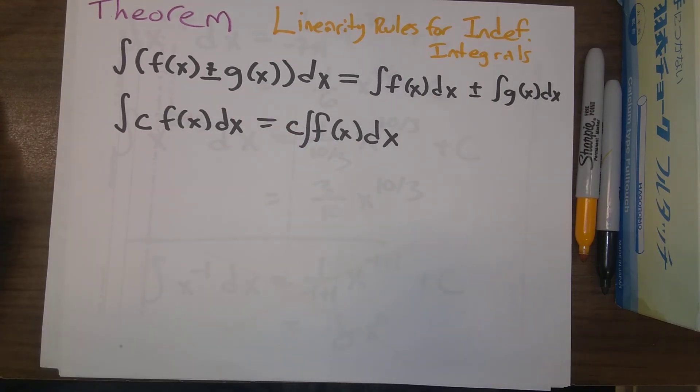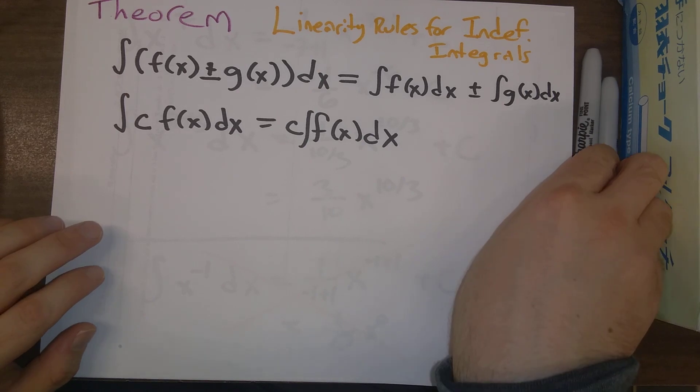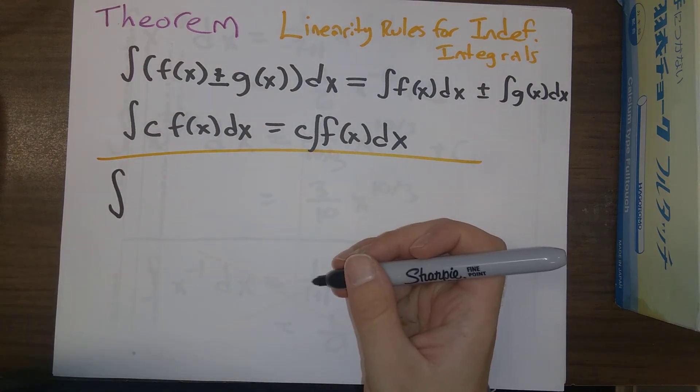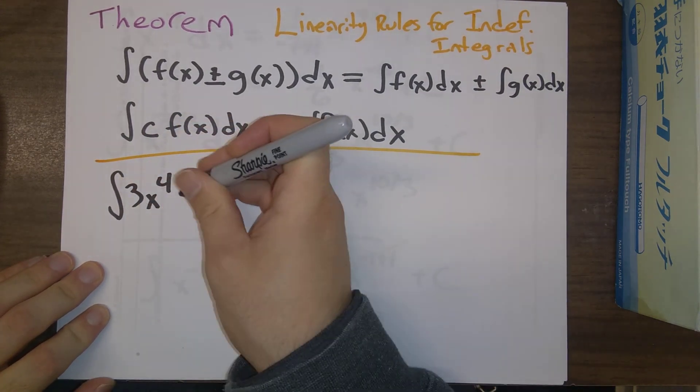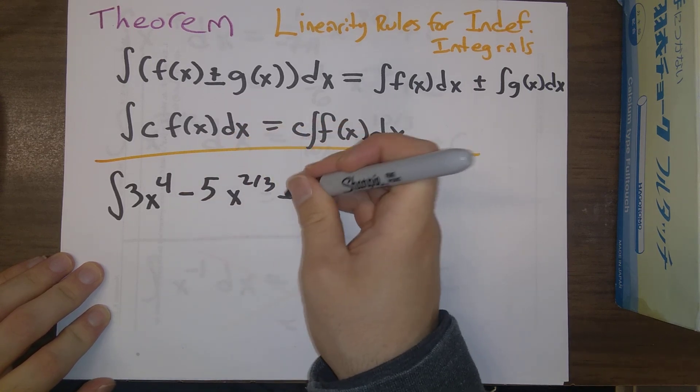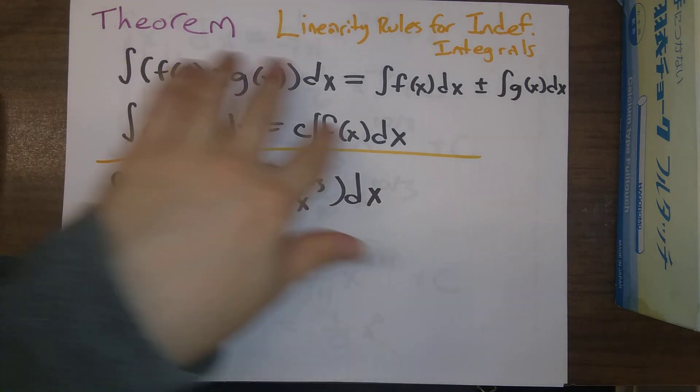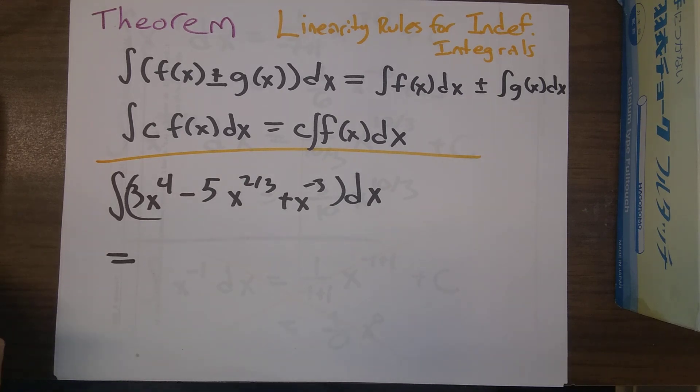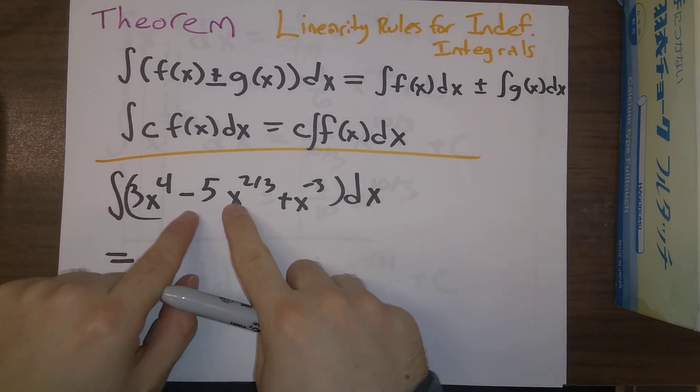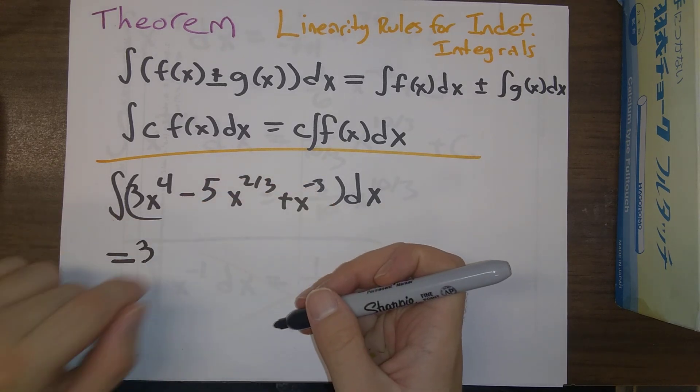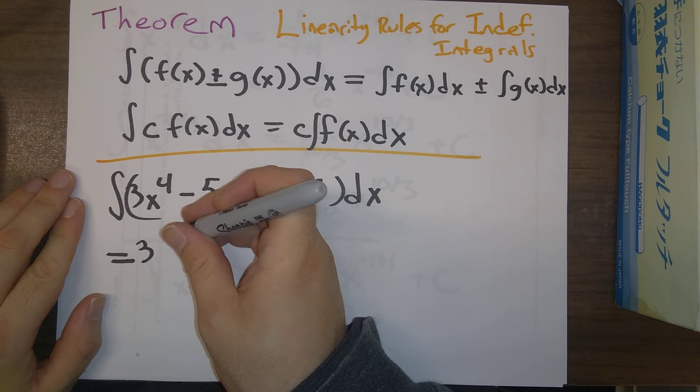So as an example of using this, we're able to do calculations like what is the integral of 3x to the fourth minus 5x to the two-thirds plus x to the minus 3 dx. So what these rules effectively allow us to do is to integrate, as the quote goes, term by term. That's the phrase that we use here. So instead of doing all this at once, we first look at the first term, and we can move out a factor of 3 times the integral of x to the fourth is x to the fifth, but we have to divide by 5.